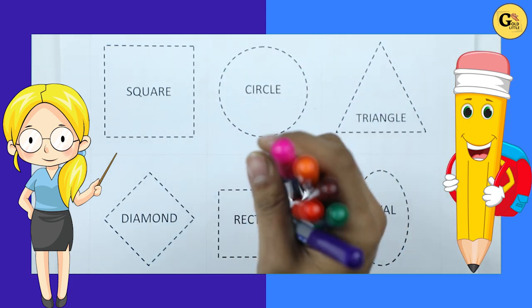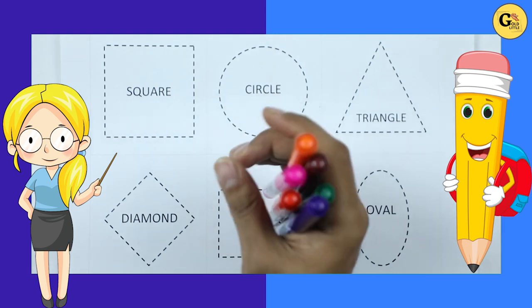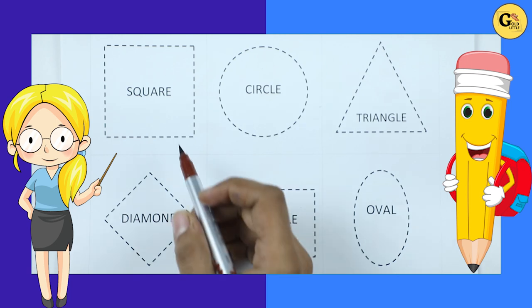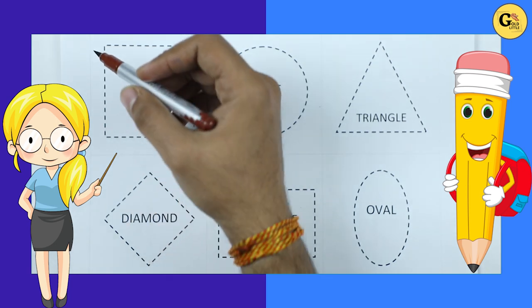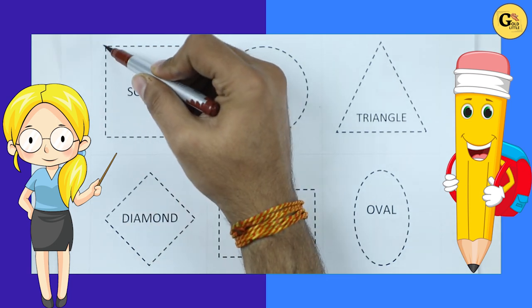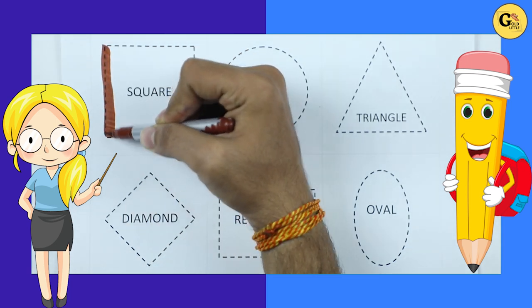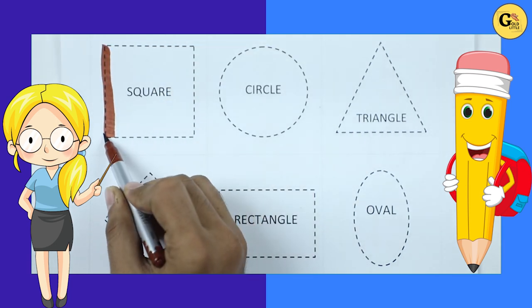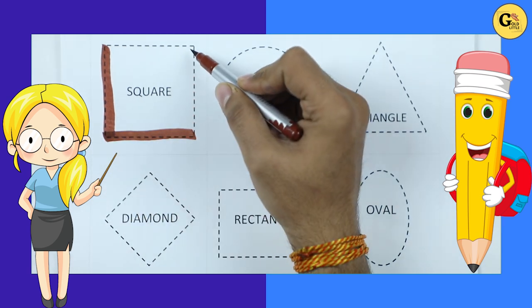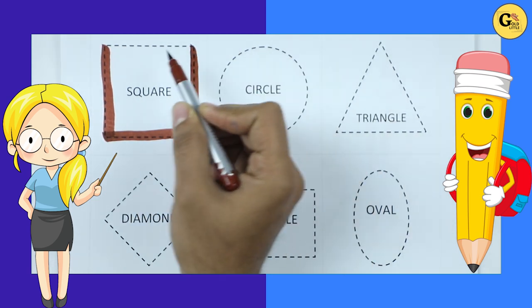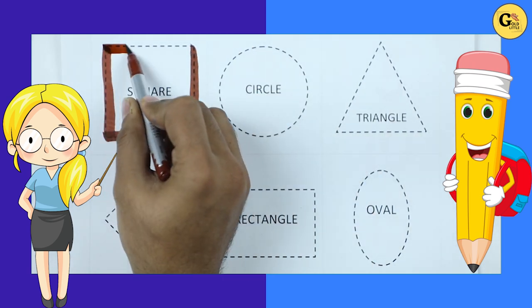Learn shapes. It's square. We draw square with brown color. Square.